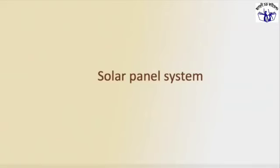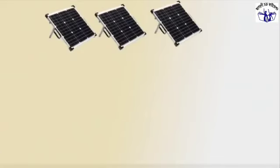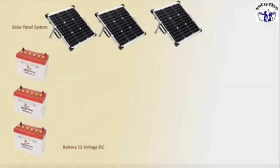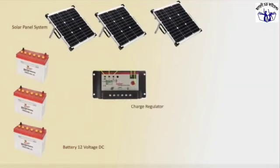Cool solar panel system overview. This system uses a 12-volt solar panel with parallel connection for the solar panel system. The battery is a 12-volt DC battery. A charging regulator controls the full voltage, connecting two solar panels to the charging regulator.